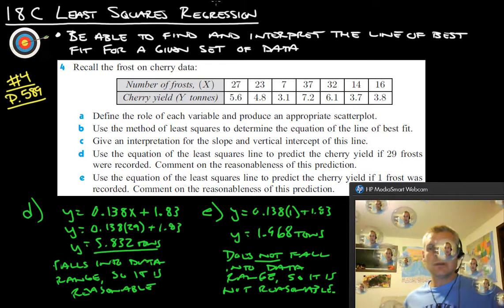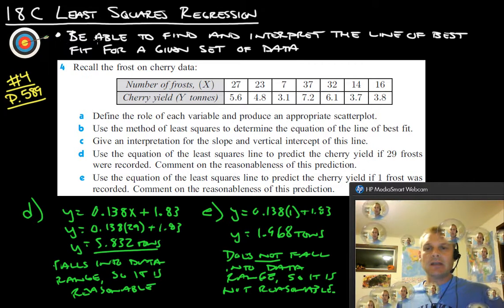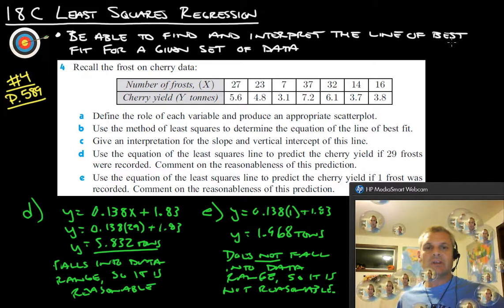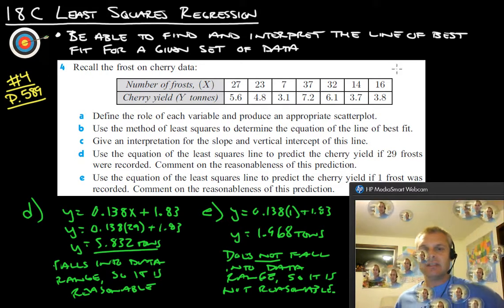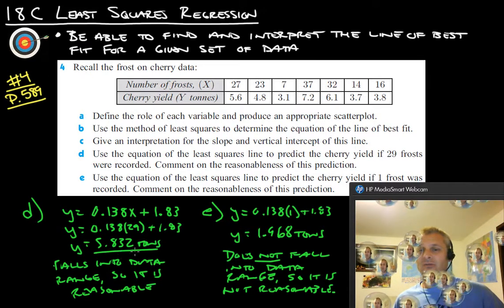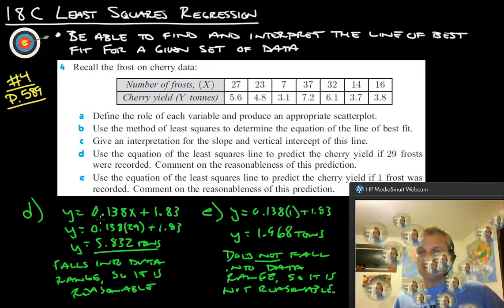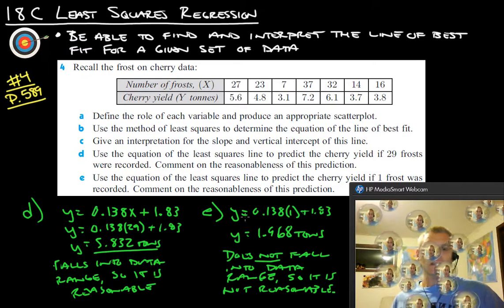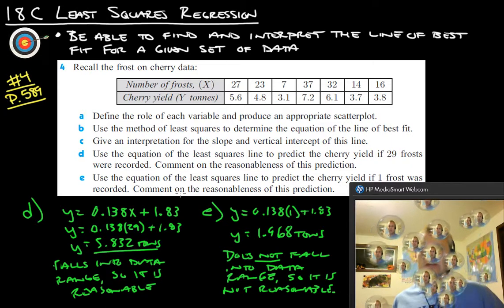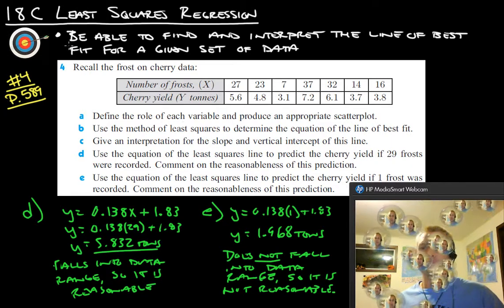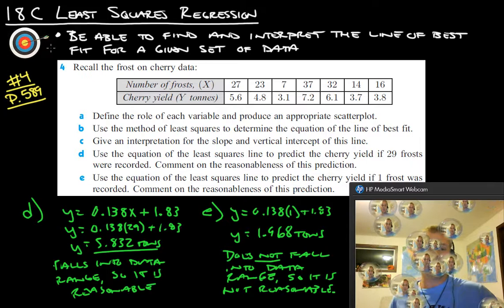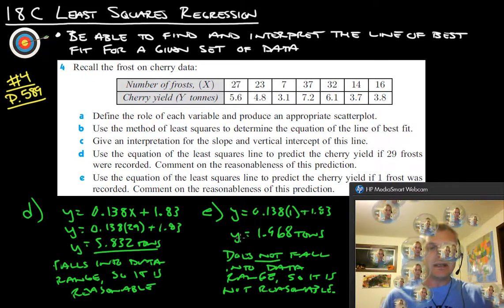So that's really all there is for this. So you should now be able to say that I am able to find and interpret the line of best fit for a given set of data. And you were able to tell what the slope was. And we can talk about if it's reasonable or not. So this is a good section to kind of help tie this stuff together. If you have any questions, please ask. Thanks.